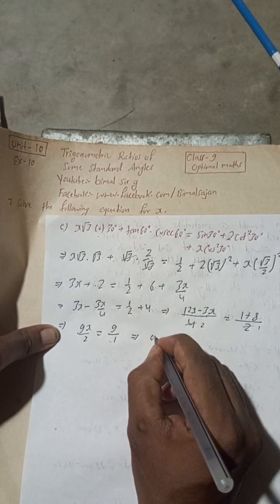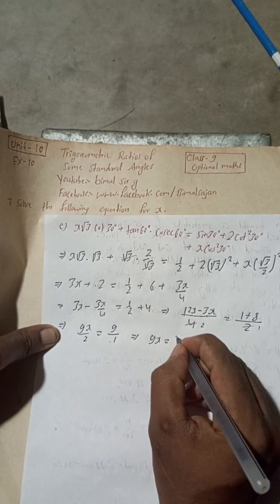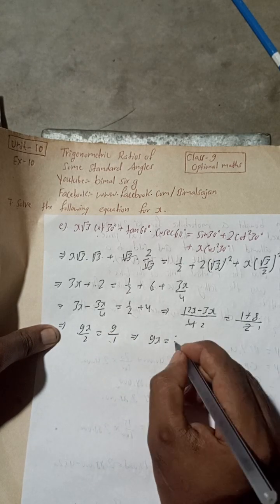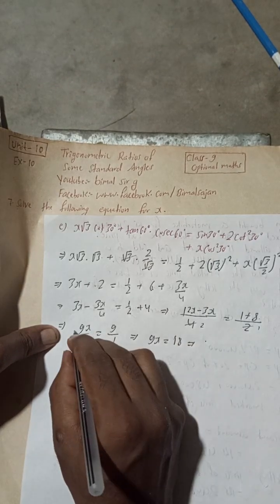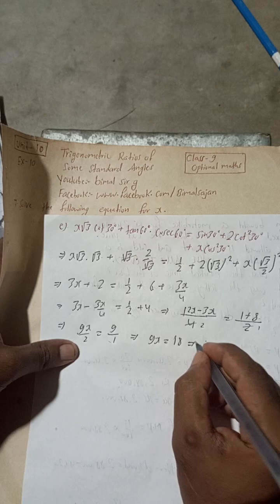Now when you cross multiply, 9x is equal to 9 times 2. 9x is equal to 18. Or you could cancel also, 18. But let it be.